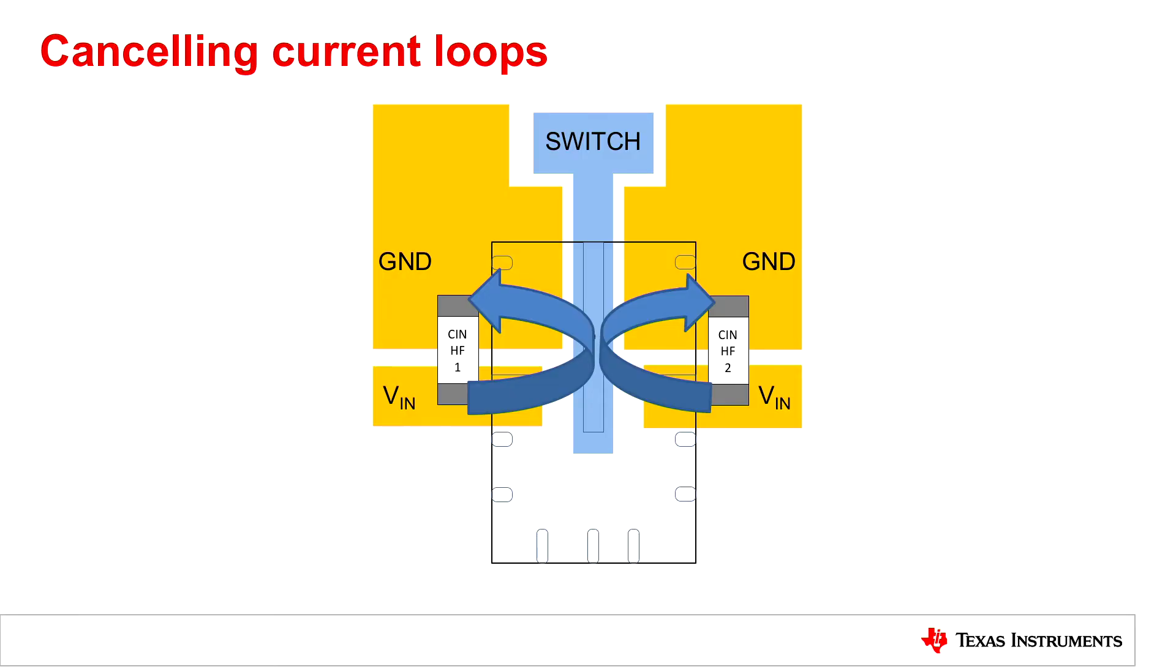Another important aspect of this particular regulator is the way the input and ground connections have been laid out. As you can see from the slide, there are two sets of VIN and ground connections, one on either side of the die. And that means that the input current flows from both sides of the die from the input into the device.